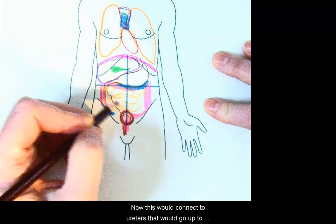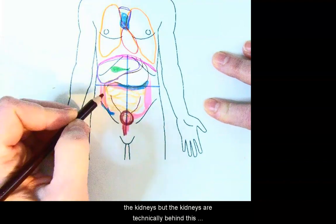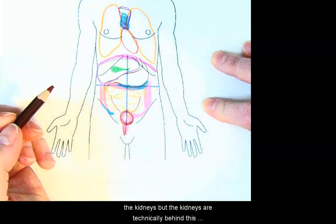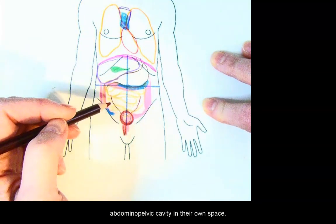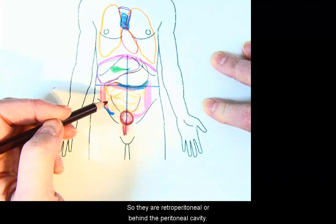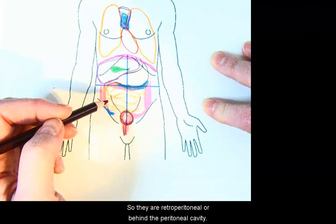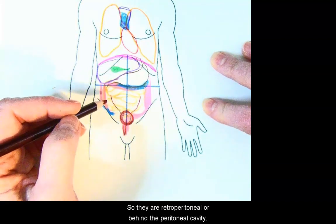Now, this would connect to ureters that would go up to the kidneys, but the kidneys are technically behind this abdominopelvic cavity in their own space. So they are retroperitoneal or behind the peritoneal cavity.